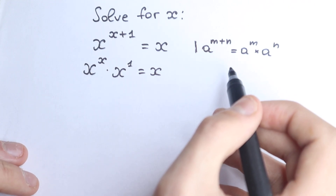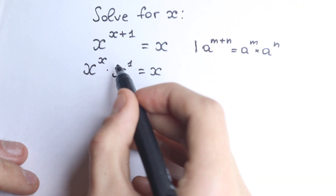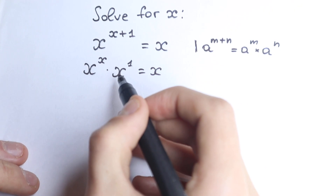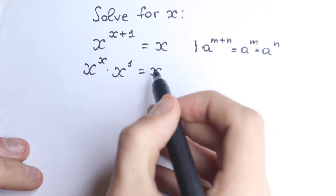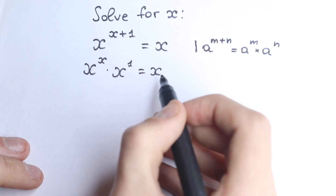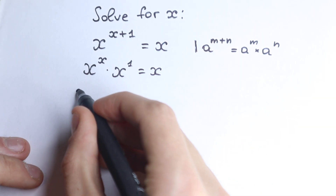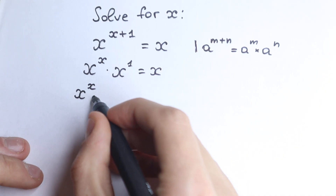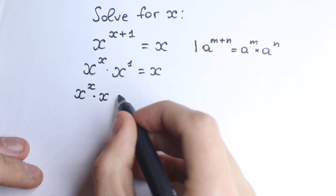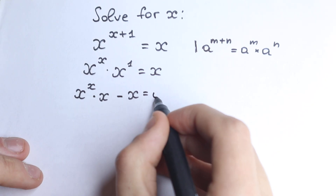What are we going to do next? There are a lot of approaches, but I want to show you the easiest one. In classic math you bring variables to the left and constants to the right. We don't have any constants, so let's bring this x to the left hand side: x to the power x times x to the first, minus x, equals zero.